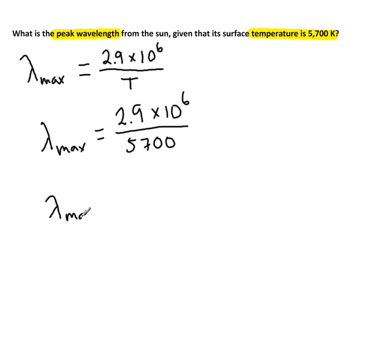I find out that the peak wavelength is 508.8, and the units are nanometers. And those units, that's just something I know about Wien's law.